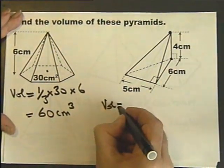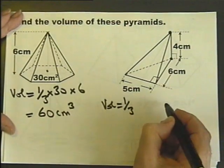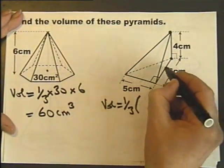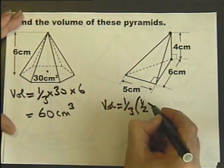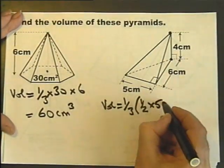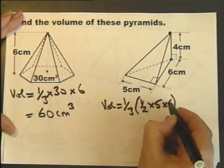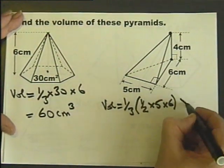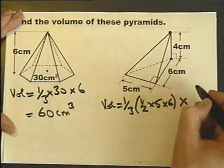So the volume will be a third, the area of the base. Now the area of the base, because it's a right-angled triangle, will be half 5 times 6, half the base times the perpendicular height of that triangle. So that's the third, the area of the base, and that we've got to multiply by the perpendicular height, which is 4.